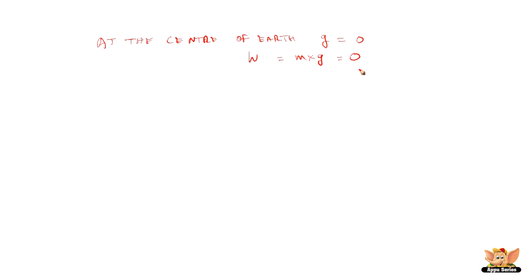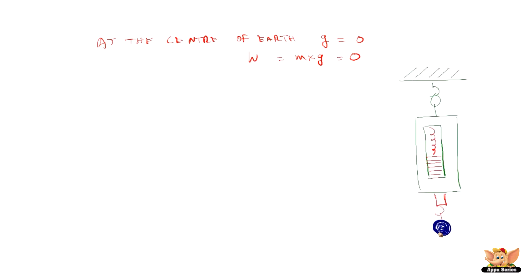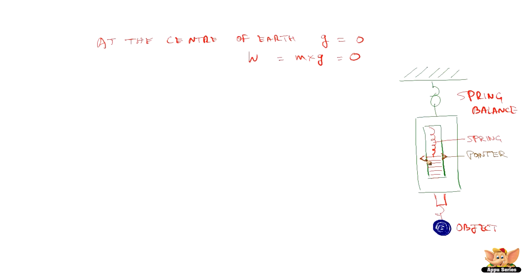Let us measure weight using a spring balance. A spring balance has a spring inside, and an object of certain mass is hung from it. The spring extends, and the extension of the spring gives the measurement of weight. The pointer shows how far the spring has extended, and that gives rise to the weight of the object.